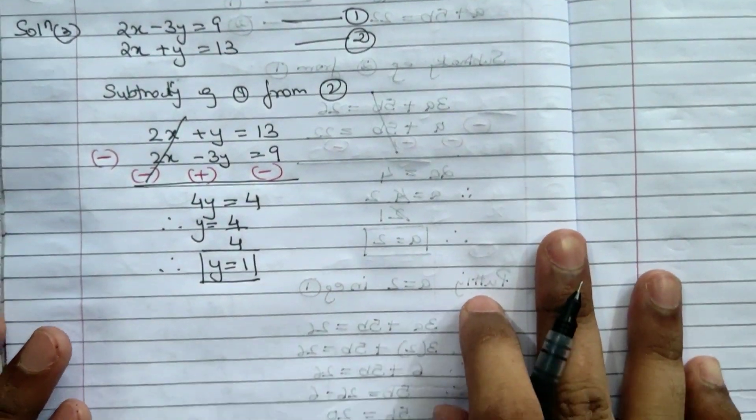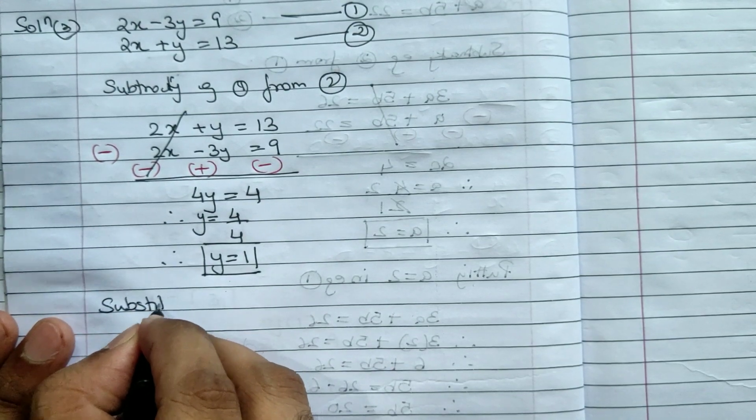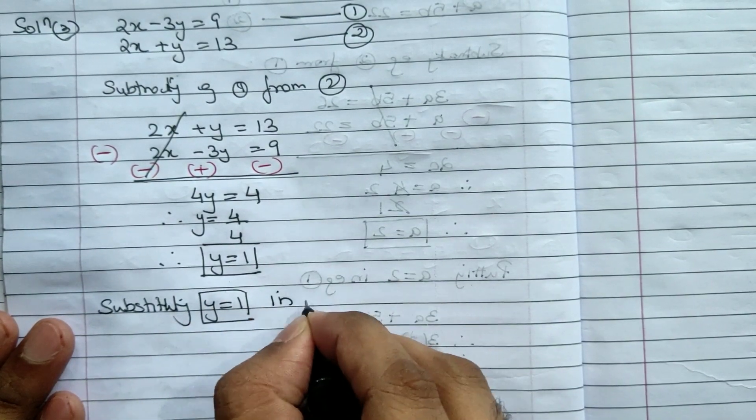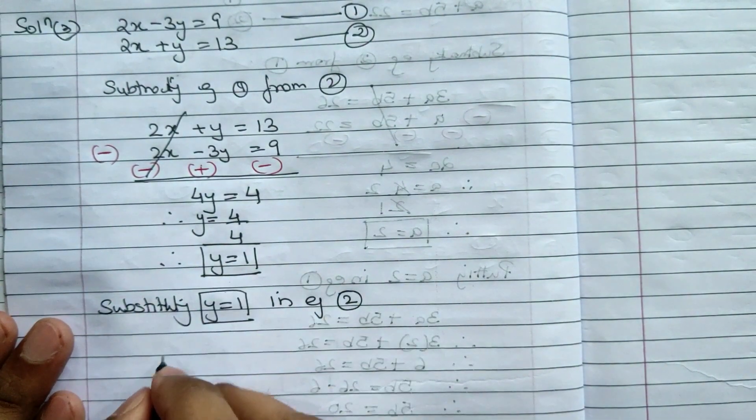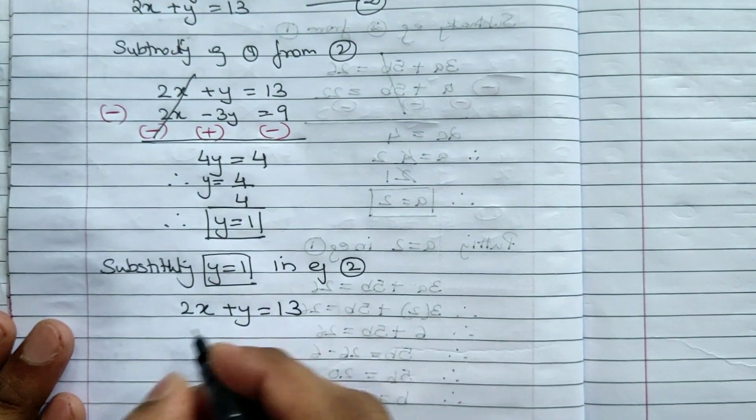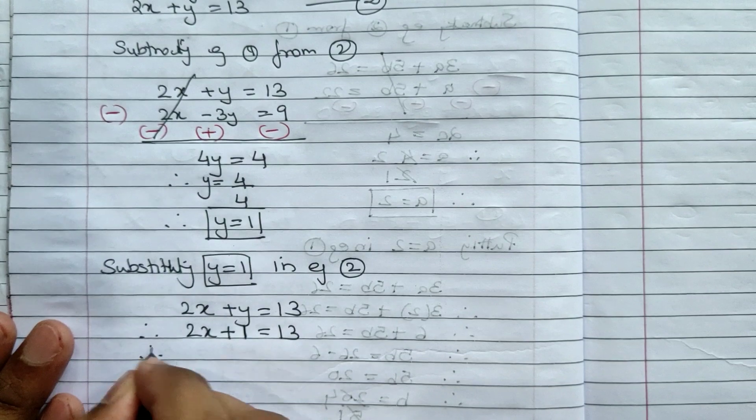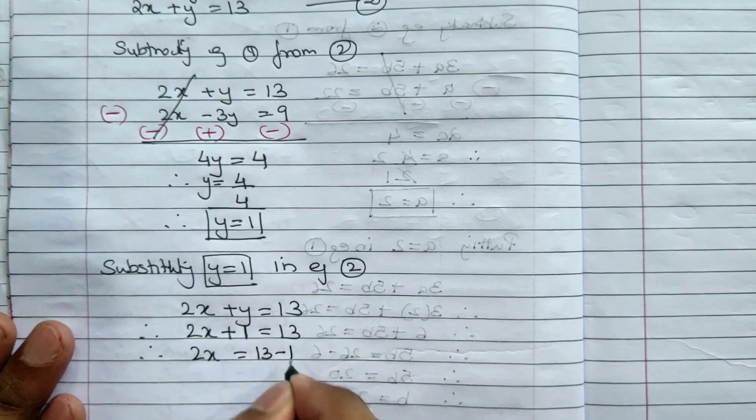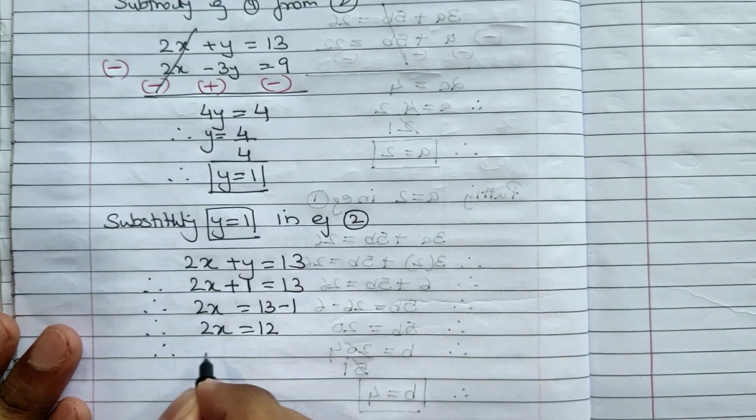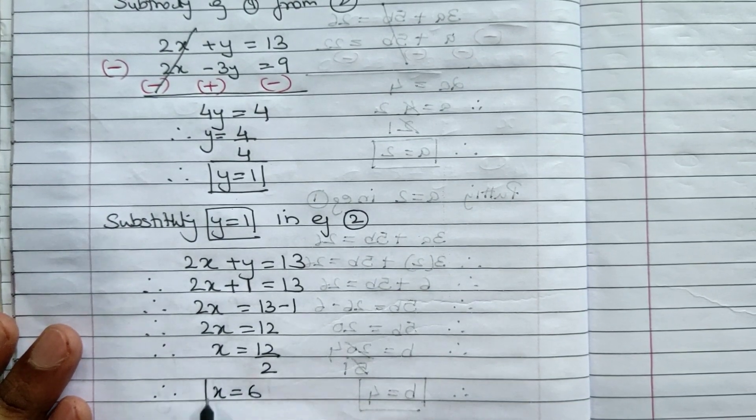Plus 2x minus 2x gets cancelled. y plus 3y gives me 4y. 13 minus 9 gives me 4. So the value for y will be 4 upon 4. Therefore y equals 1. I will write - substituting y equal to 1 in equation number 2. Let us write equation 2: 2x plus y equals 13. Therefore 2x plus 1 equals 13. Therefore 2x equals 13 minus 1. Therefore 2x equals 12. Therefore x equals 12 upon 2. Therefore x equals 6.